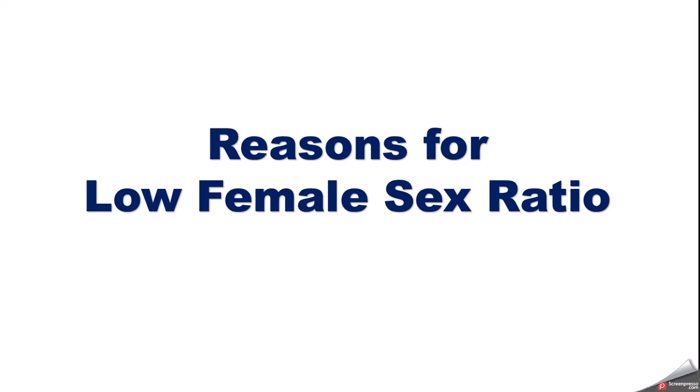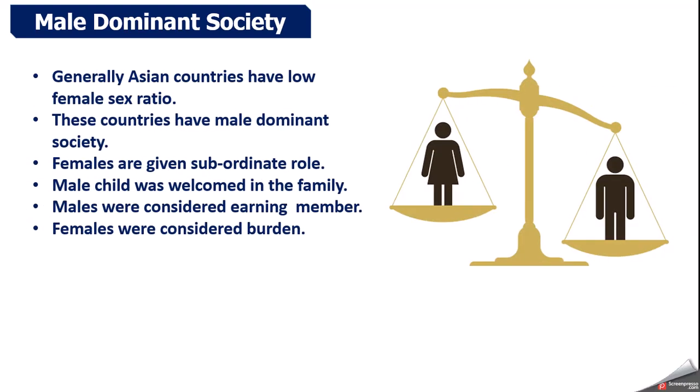Reasons for low female sex ratio: First — male dominant society. जितने भी countries का नाम लिया जहाँ पर female की संख्या कम है, वहाँ पर male dominant society देखी जाती है — पुरुष प्रधान देश। उन समाजों में पुरुषों को अधिक प्रधानता दी जाती है, परिवार में लड़के को एहमियत ज़्यादा दी जाती है। ये बातें अभी की नहीं हैं — समाज बदल गया है और लगभग हर देश में सुधार हो चुके हैं।